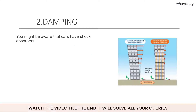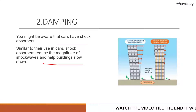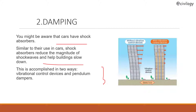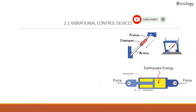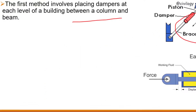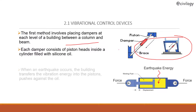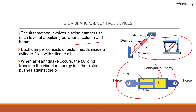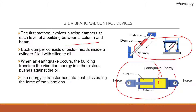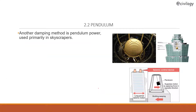The next method is damping. Similar to shock absorbers in cars, damping devices reduce the magnitude of shock waves and help buildings slow down. With vibration control devices, dampers are placed at each level of a building between a column and a beam. Each damper consists of a piston head inside a cylinder filled with silicon oil. When an earthquake occurs, the building transfers vibrational energy into the pistons, which push against the oil, transforming the energy into heat and dissipating the force of vibrations.